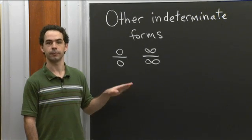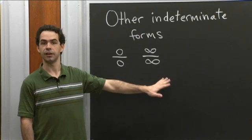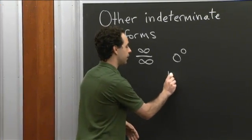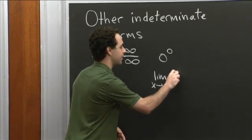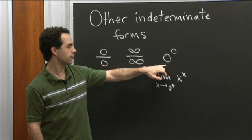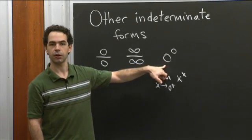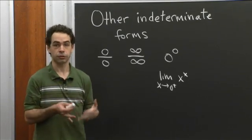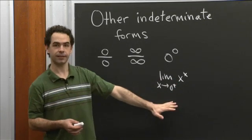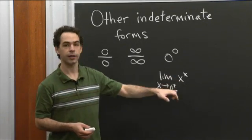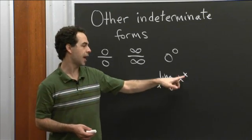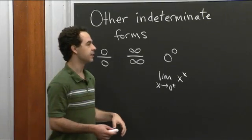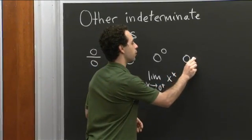There are other indeterminate forms for limits as well. You actually saw in lecture another one: a limit of the form 0 to the 0. The limit you saw was the limit as x goes to 0 from the right of x to the x. The two competing forces are that as the base goes to 0, that wants to make the whole thing get closer to 0, and when the exponent is going to 0, that makes the whole thing want to get closer to 1. That's why it's an indeterminate form. When solving this limit, first you wrote it as e to the x ln x. So x ln x is also an indeterminate form as x goes to 0 — of the form 0 times infinity.